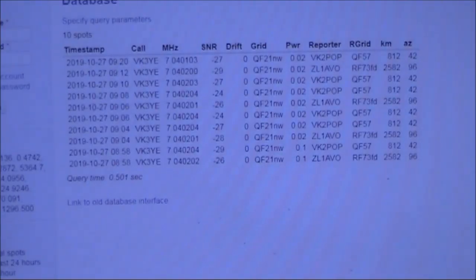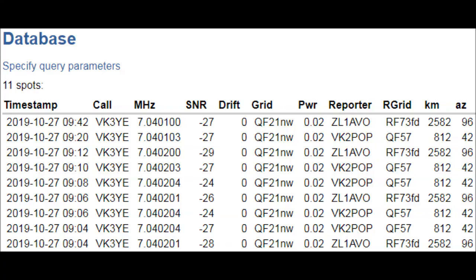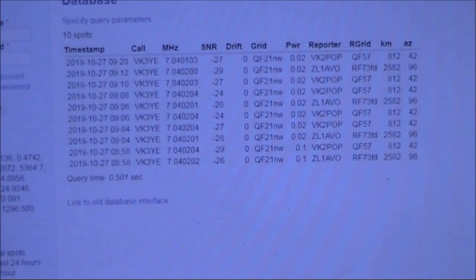Just looking at stations that have decoded my signals, there's only two: VK2POP around 800 kilometres away, and ZL1AVO at 2,500 kilometres away. This is in the early evening. If I tried at other times, there would likely be other stations that would decode my transmission.